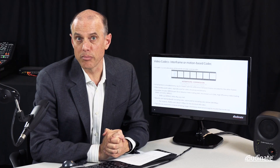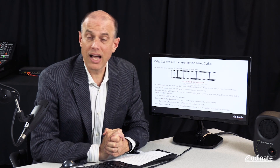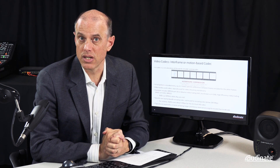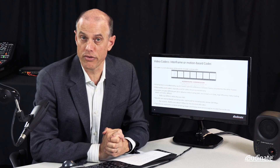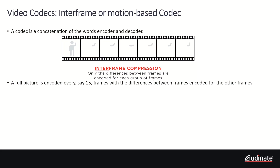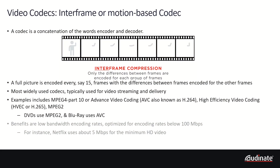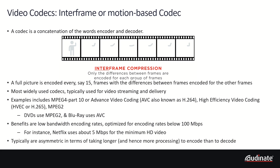The word codec is a blend of the words coder and decoder, as both parts are required. At a high level there are two types of compression: interframe and intraframe. Interframe, or motion-based codecs, involve encoding a full picture every, say, 15 frames, and for the frames in between the full encoded frames, only the changes to the frame are encoded. This type of compression is the most popular and is typically used for streaming, as it is optimized for bitrates below 100 megabits. For instance, Netflix typically requires about 5 megabits minimum for HD video. Motion-based codecs are asymmetric in terms of requiring more resources to encode than to decode.